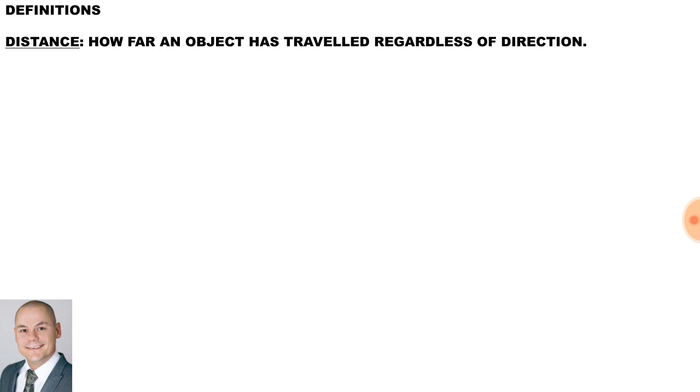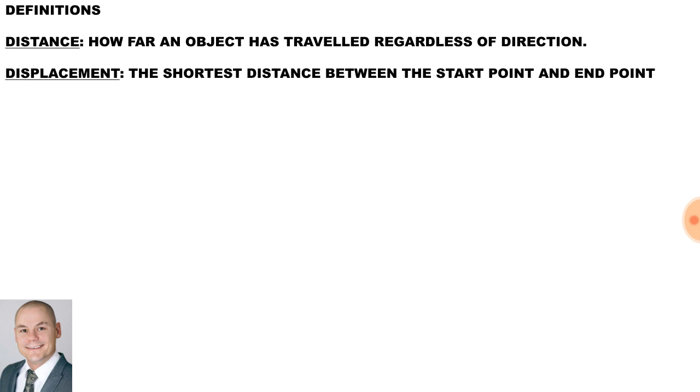Let's look at some definitions used in engineering science, such as distance. How far an object has travelled regardless of direction. Displacement. The shortest distance between the start point and the end point.